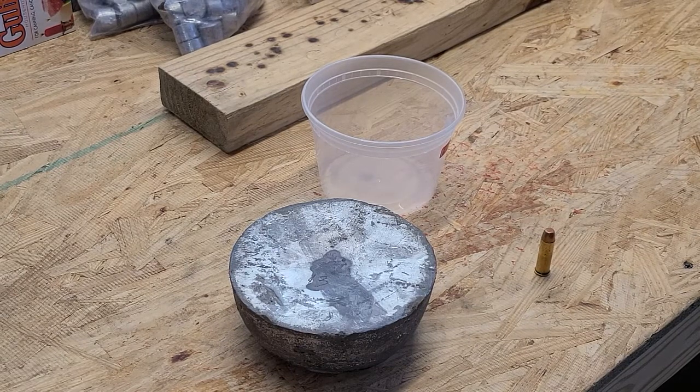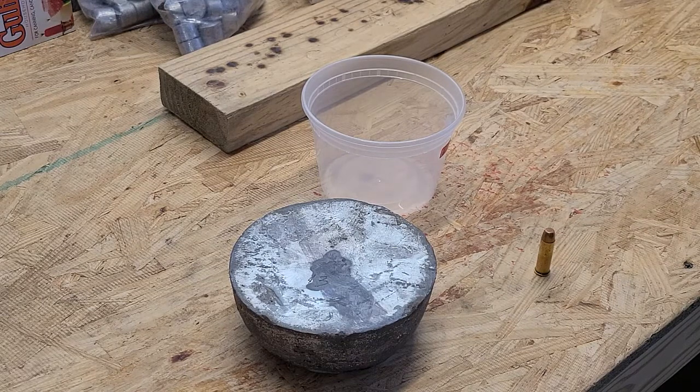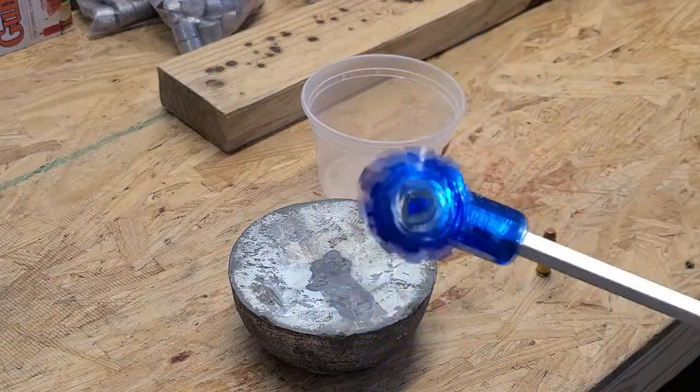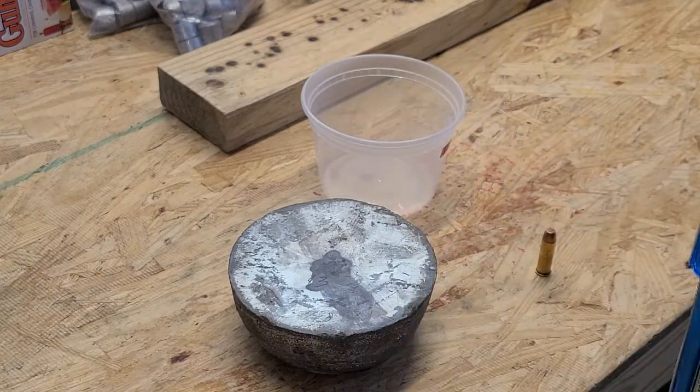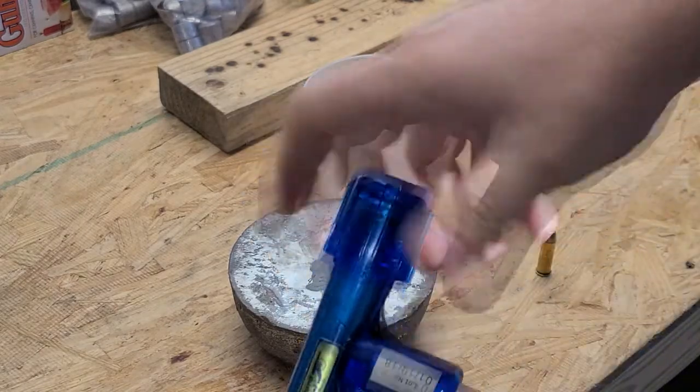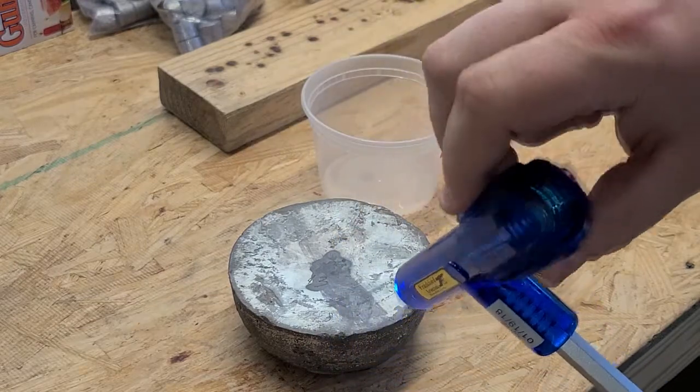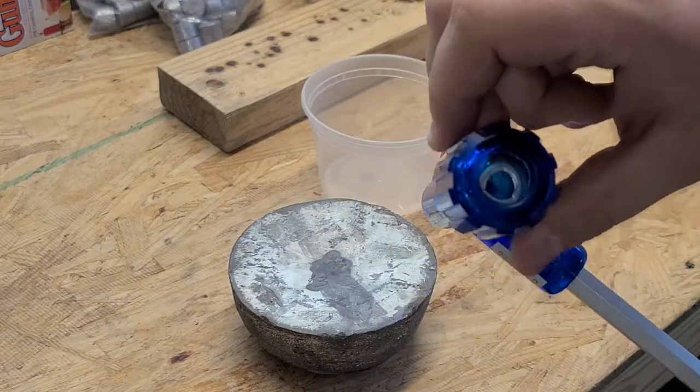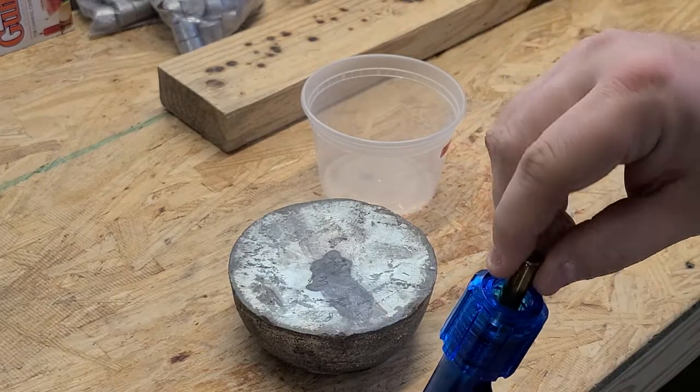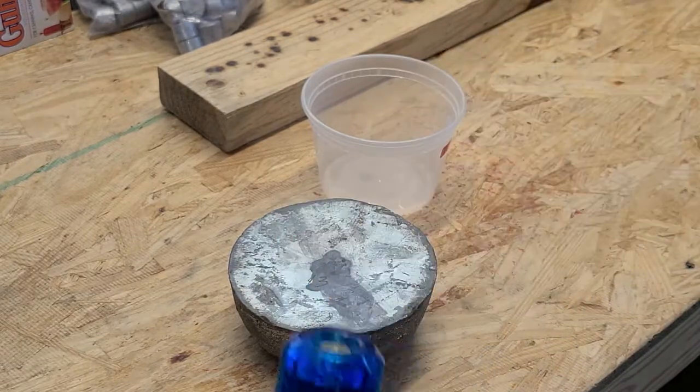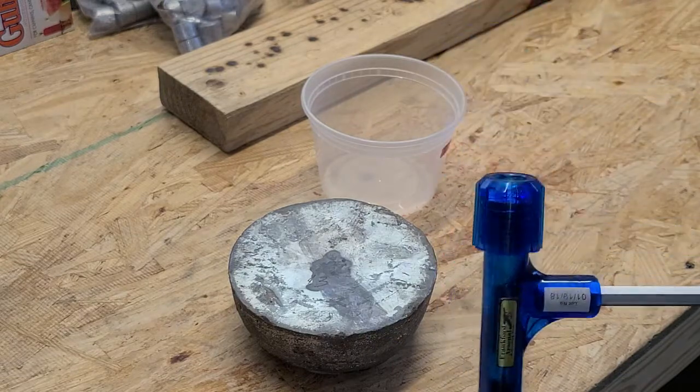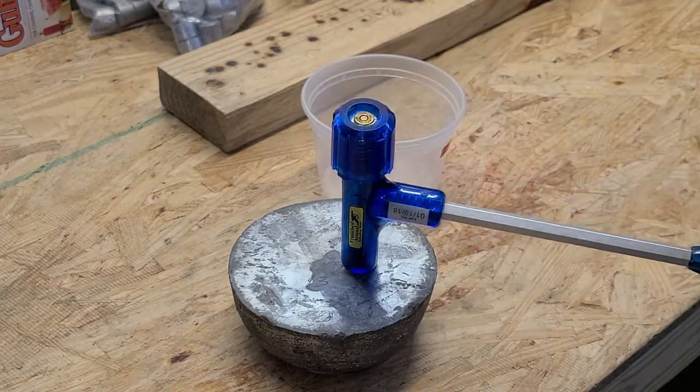That was an RCBS collet bullet puller. This is a kinetic bullet puller by Frankfurt Arsenal. How you use these: you just loosen this up - you don't have to take it all the way off. There's a collet in there. Drop your round in, it'll catch on the rim or in the extractor groove, and tighten it. Instead of bashing on wood, I'll usually use one of my lead ingots.